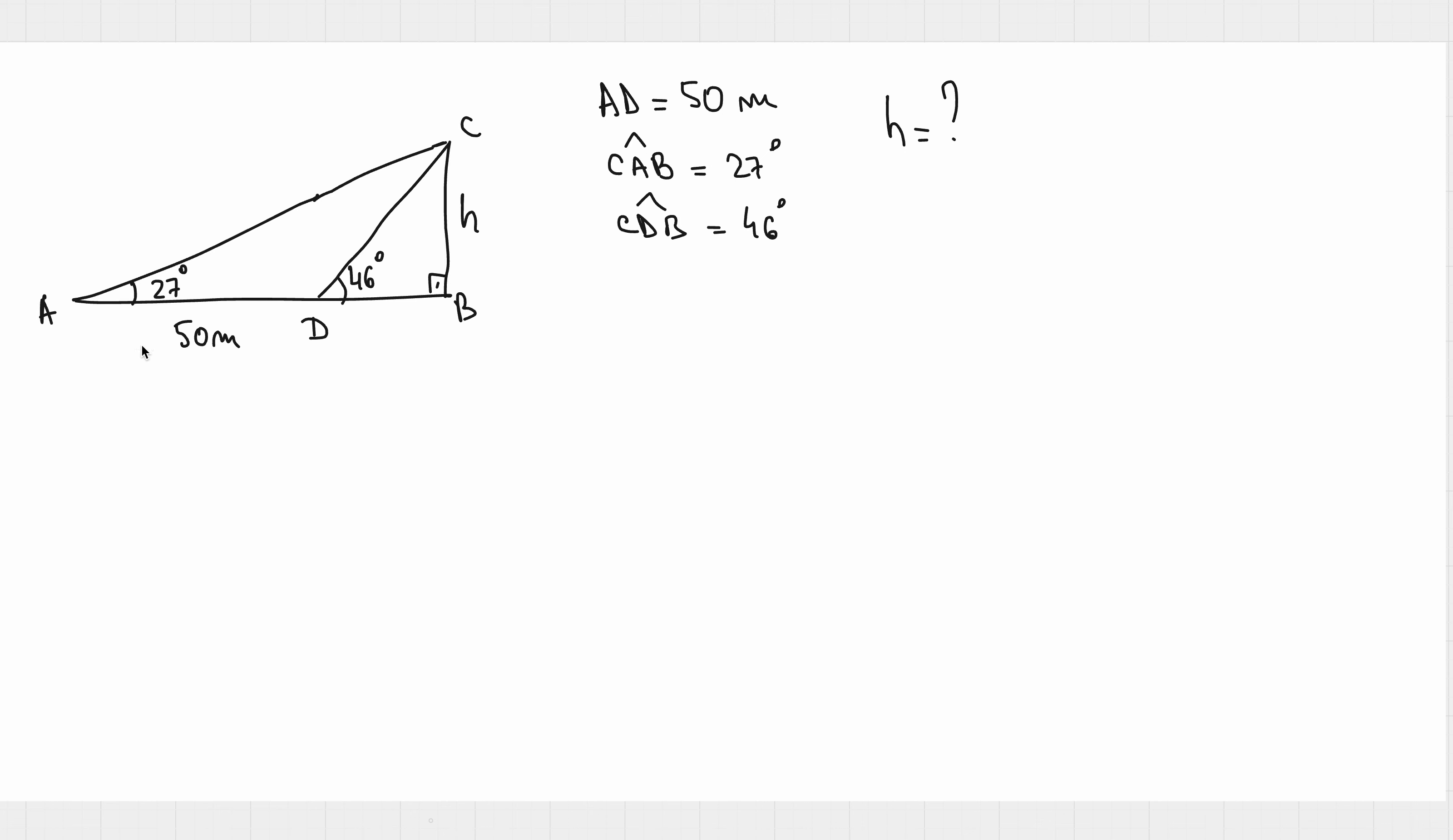the angle CAB which is 27 degrees and the angle CDB which is 46 degrees. D is not situated in the middle of AB, it's just a point on that segment.